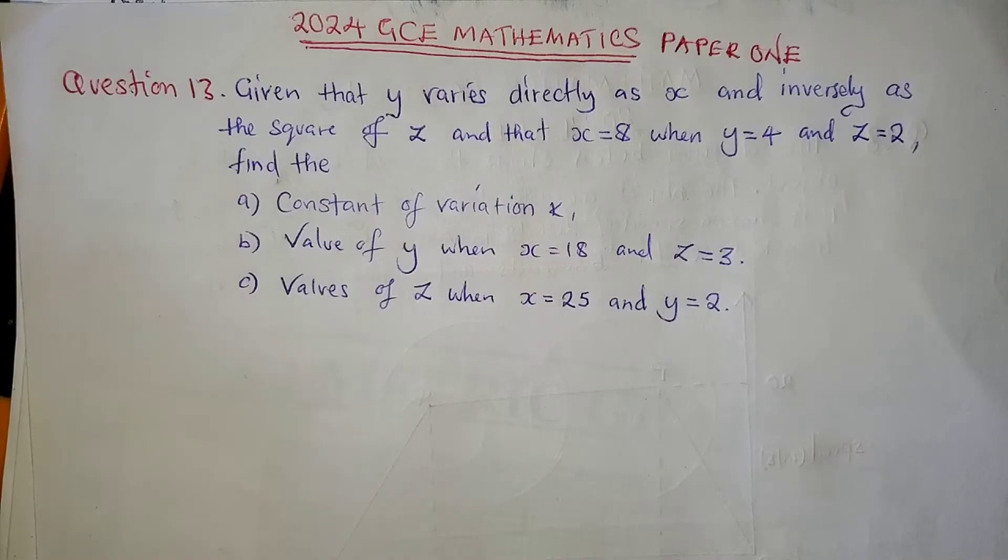Now, in this video, we're going to look at Mathematics Paper 1 of 2024 GCE, question 13, 17, and the last question, which is question 23. Other questions have been covered in Part 1, Part 2, and Part 3. This is the fourth and the last video of Mathematics Paper 1 of 2024. You can go to the playlist of Mathematics GCE Part 1 of 2024. You'll find all other parts. So, let's get started.